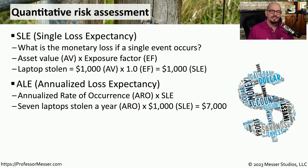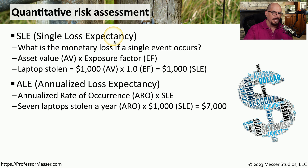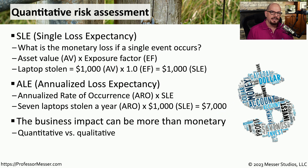In our organization, we can estimate how many laptops will be stolen in a single year. To calculate the ALE, or annualized loss expectancy, we multiply the annualized rate of occurrence (ARO) times the SLE. So if we expect seven laptops stolen in a year, the ARO is seven, and multiplying that by the $1,000 SLE gives us an annualized loss expectancy of $7,000. However, this calculation only accounts for the financial cost. There may be other risks, such as the data on those laptops being more valuable than the laptop itself. That's why we use both quantitative and qualitative risk assessments.